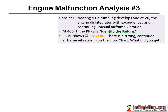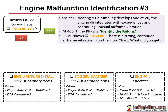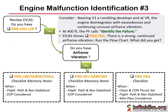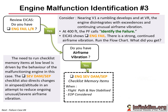Scenario 3: nearing V1, a rumbling develops and at VR the engine basically disintegrates with exceedances and continuing unusual airframe vibration. At 400 feet the pilot flying says 'identify the failure.' ICAS shows engine fail and there's strong continued airframe vibration. Flowchart: engine fail on ICAS - yes. Airframe vibration - yes. We're going to run engine severe damage/separation memory items. It's worth noting that the engine severe damage/separation checklist also directs changes in airspeed and altitude to reduce ongoing unusual severe airframe vibration. At this point the engine is already shut down - pulling the fire handle and turning the fuel control off is securing it rather than shutting it down. The checklist will attempt to ameliorate those airframe vibrations that continued after the failure.